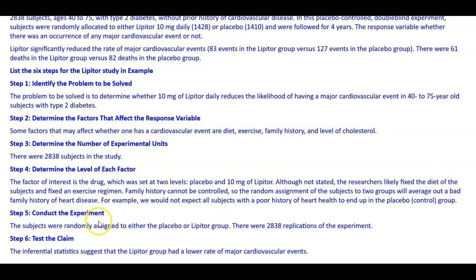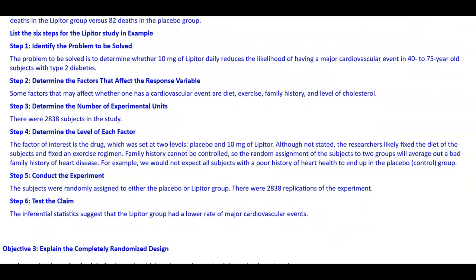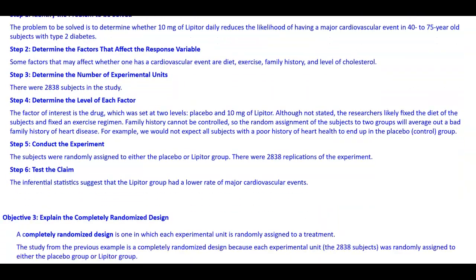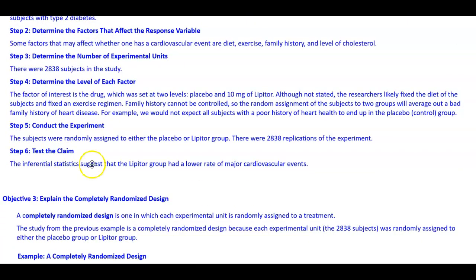Step five: conduct the experiment. The subjects were randomly assigned to either the placebo or Lipitor group, and there were 2,838 replications of the experiment. Step six: test the claim. The inferential statistics suggests that the Lipitor group had a lower rate of major cardiovascular events.